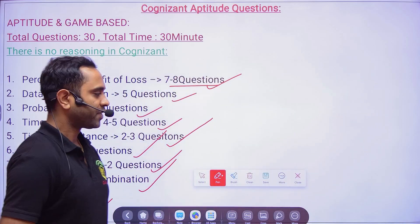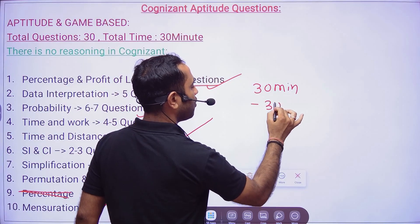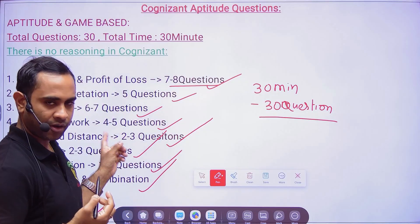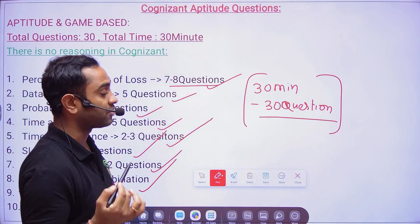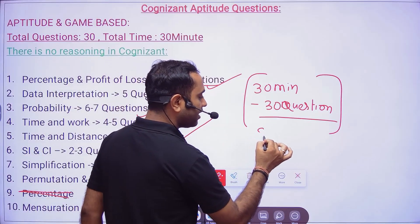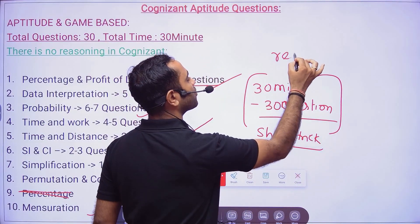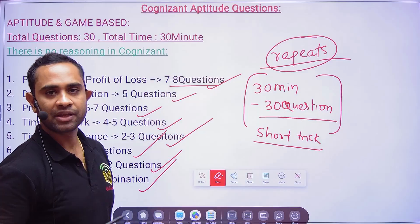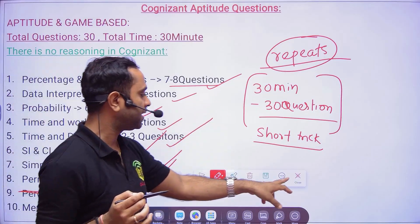30 minutes and 30 questions is very challenging. The level of questions will not be easy, so you need to know short tricks and how to use them. More importantly, Cognizant repeats questions, so it is very very important for you to solve all the previous year problems — only then will you be able to do well in the exam.